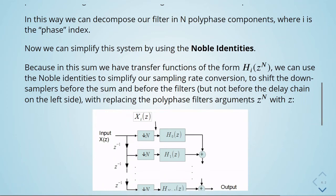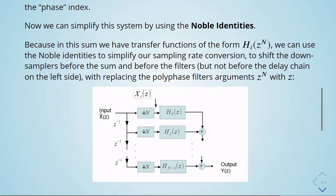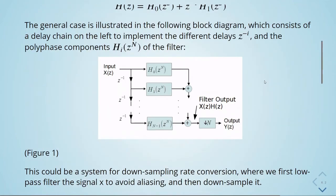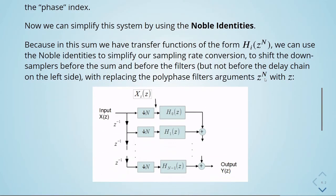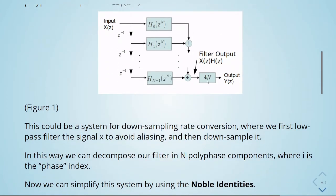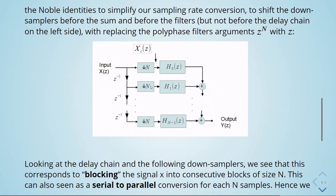Replacing the polyphase filter arguments z^N with z, now we have our input X(z), then we have here our delays, here we have the down-sampling, here we have our filters, and then we have our output. So we are moving the down-sampler here.